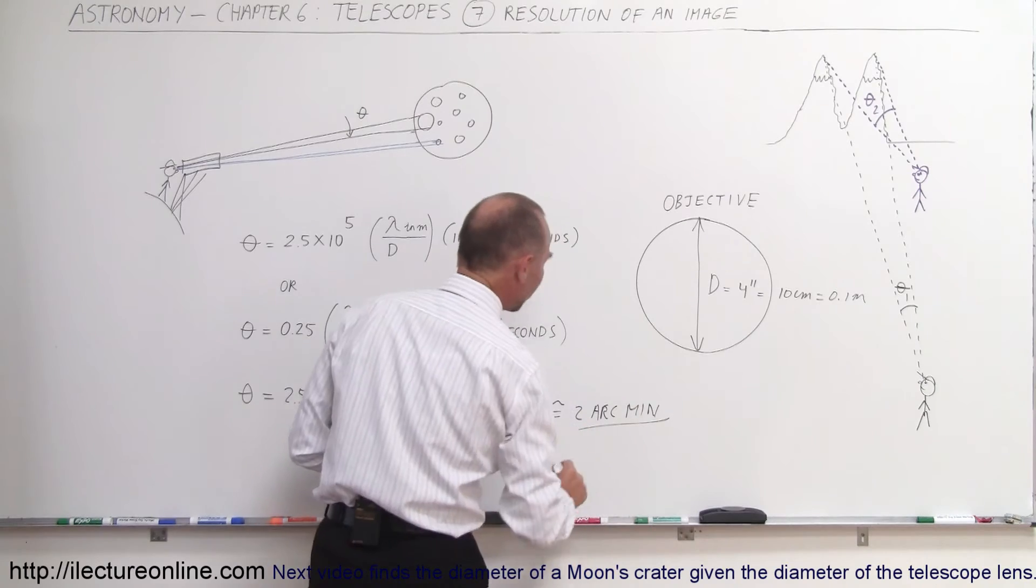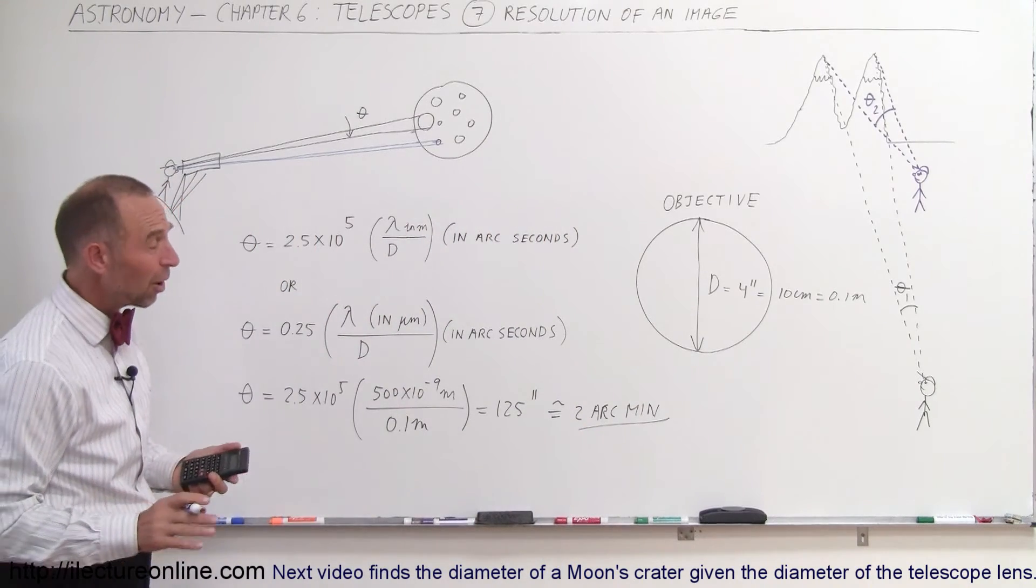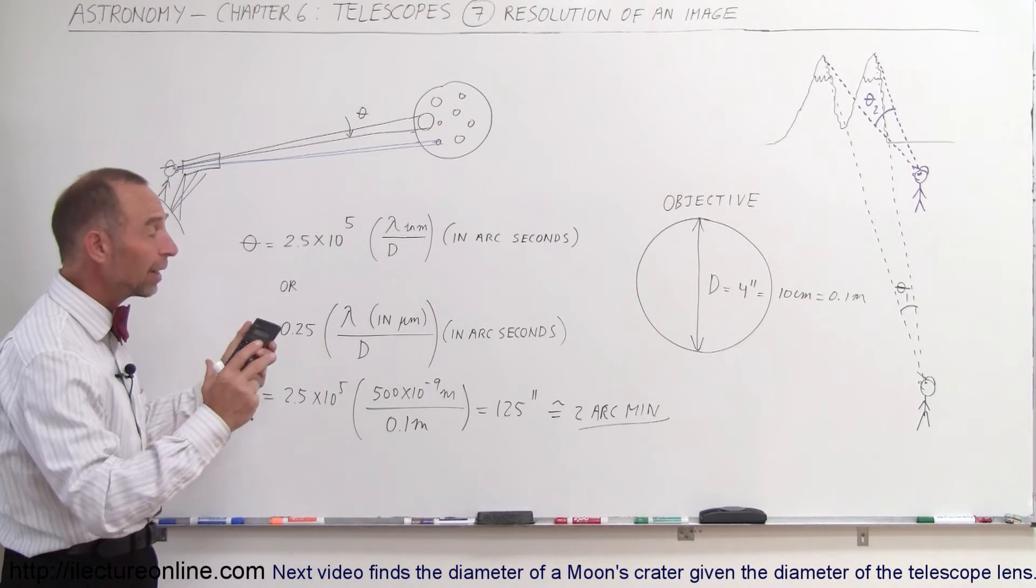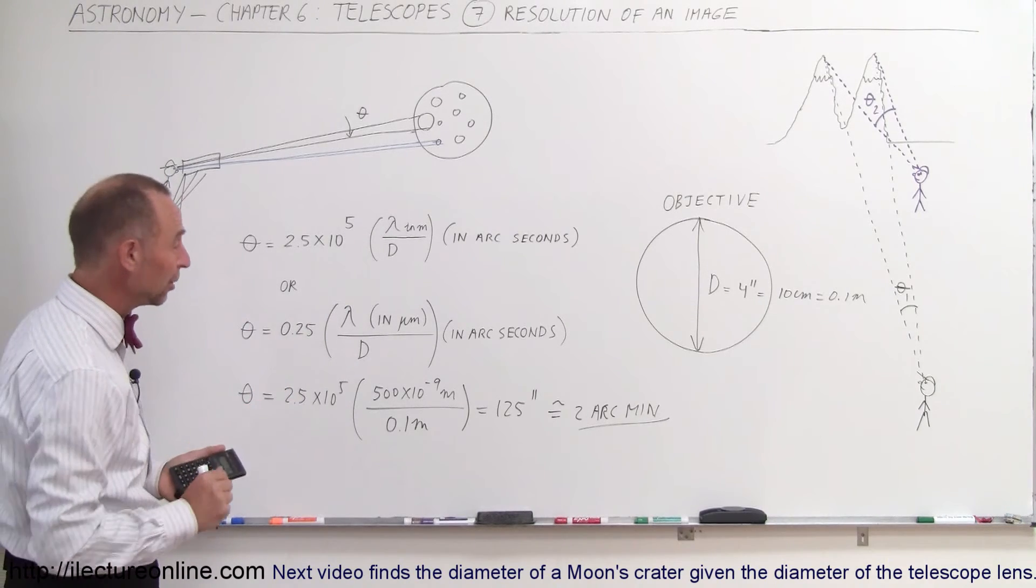So that would be the smallest angle of resolution. Not very small. That means you can only see big craters. You can't see the small ones because they would not be visible to you.